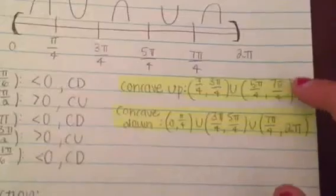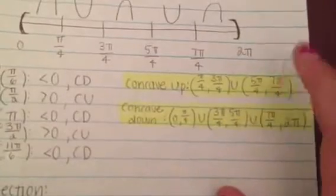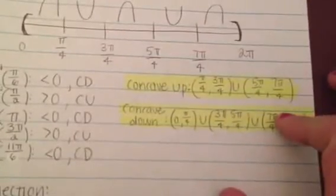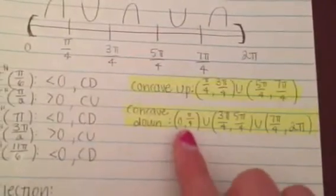So the concavity results are: concave up on (pi over 4, 3 pi over 4) and (5 pi over 4, 7 pi over 4); concave down on (0, pi over 4), (3 pi over 4, 5 pi over 4), and (7 pi over 4, 2 pi).